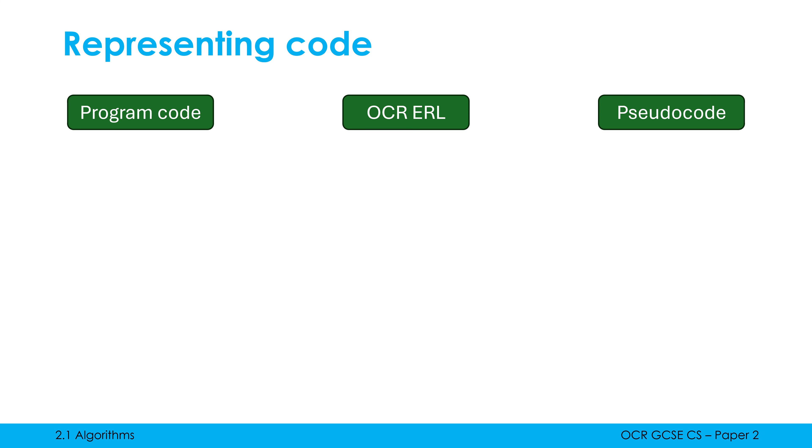Program code relates to the language you've been taught, like Python or something similar. OCR exam reference language is a made-up programming language quite similar to Python, which OCR chose to use so they weren't forcing people to learn Python. It's meant to be used by anyone studying any language, but it has a set of rules which we'll talk about in future videos. Pseudocode, out of the three, is the most enigmatic and confusing. The word 'pseudo' means fake, and pseudocode is fake code that uses the same conventions that most programming languages would use. There are no rules for pseudocode — my pseudocode might look different to your pseudocode. The aim is to simplify some of the oddities you might see in a programming language and communicate just the key concepts, which every programmer is familiar with.